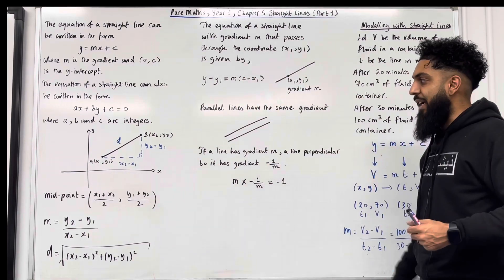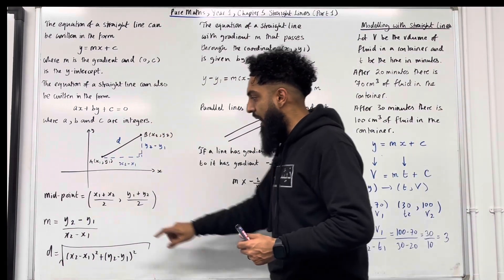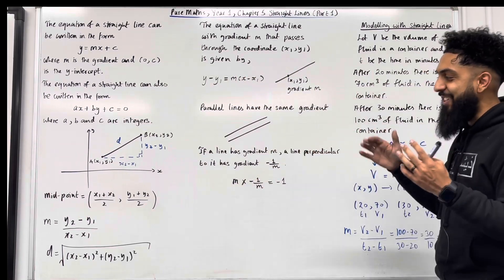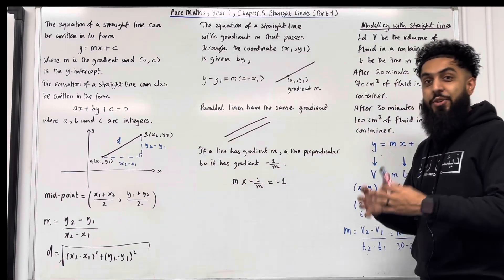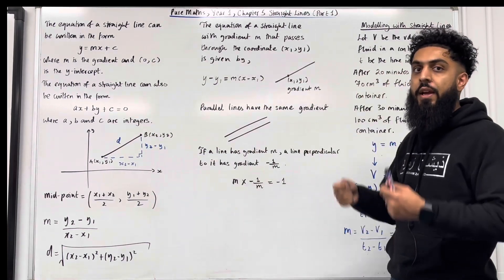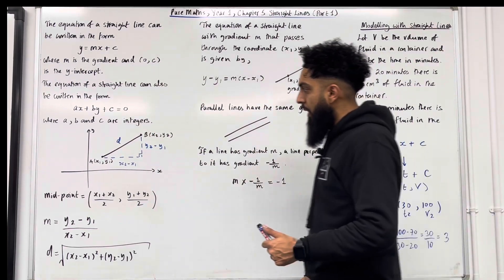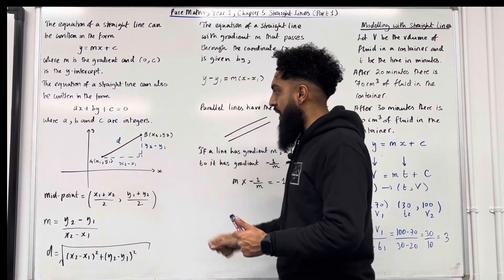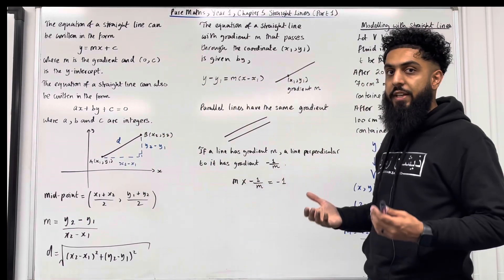To find the gradient connecting the points A and B, we apply this particular formula: y2 minus y1 over x2 minus x1. Now to find the distance between these two coordinates, we have to use Pythagoras' theorem. So this horizontal distance is x2 minus x1 and this vertical distance is y2 minus y1.